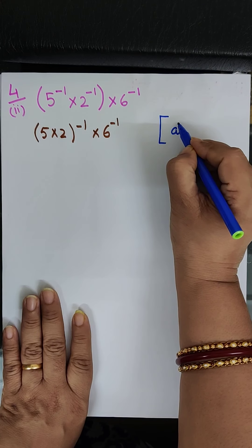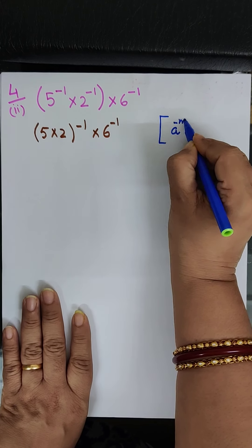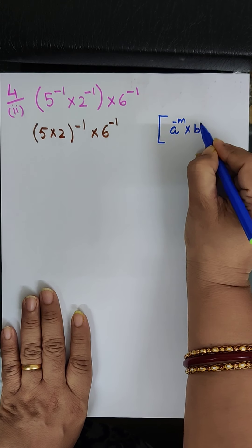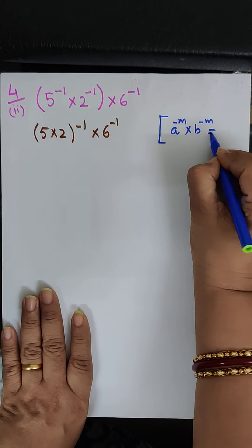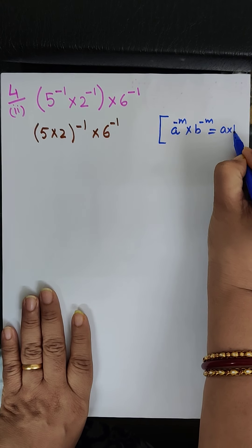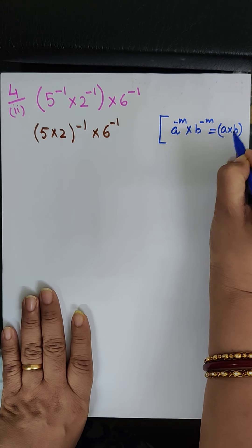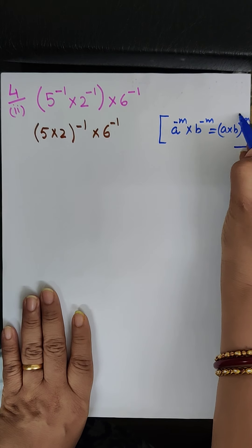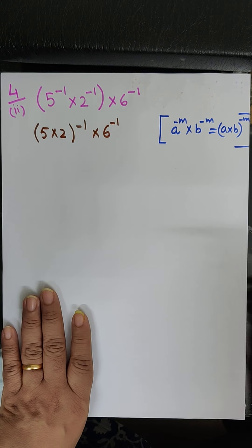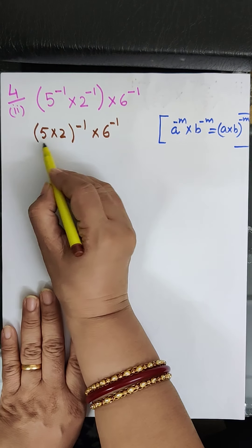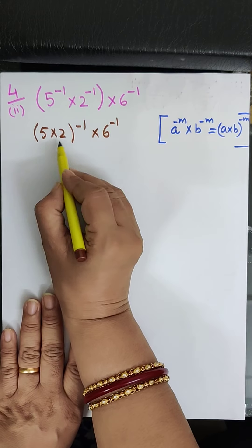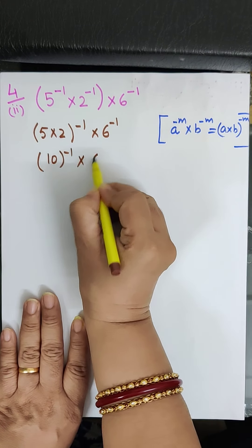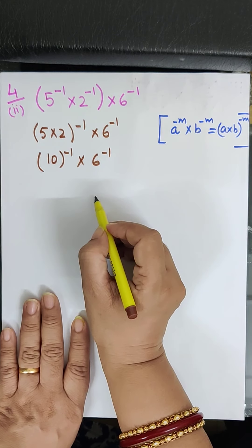The law we use is: a to the power minus m into b to the power minus m is equal to a into b, to the power minus m. So multiplying 5 into 2 gives 10 to the power minus 1, into 6 to the power minus 1.